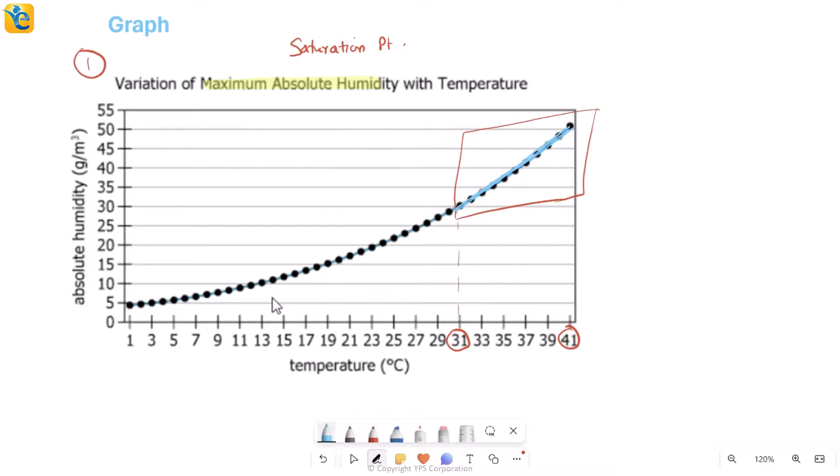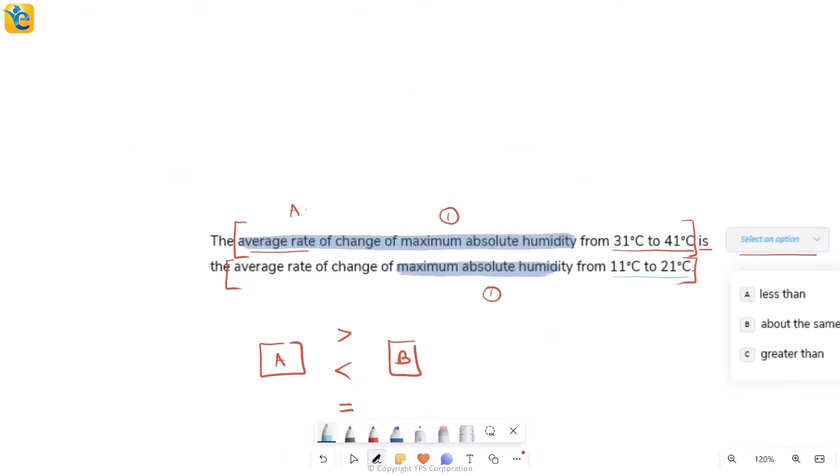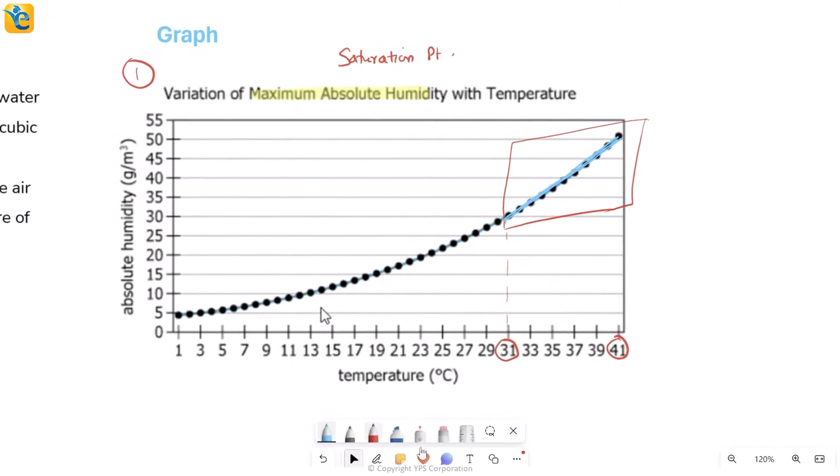I'm not calculating the value since we are just comparing two different slopes. Let's look at the second temperature range also. That's 11 to 21. We'll simply draw it from there also. 11 to 21. This is your 11, this is your 21. This time also, if I try to represent it by a straight line, this is what I have.